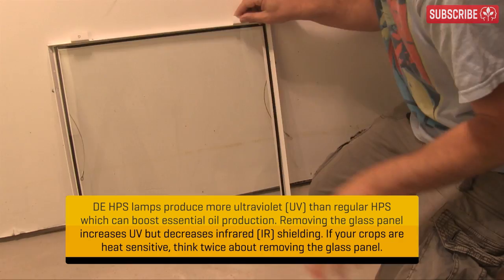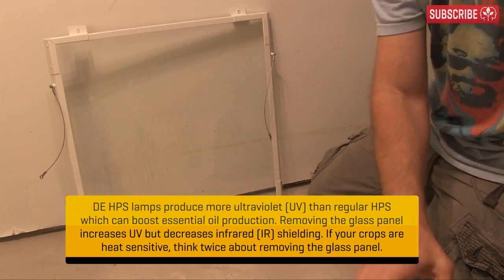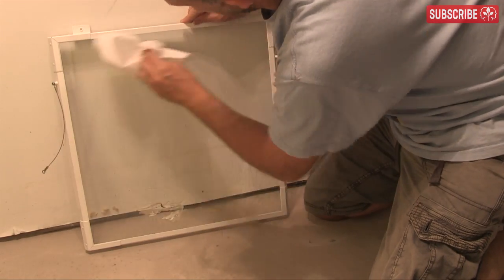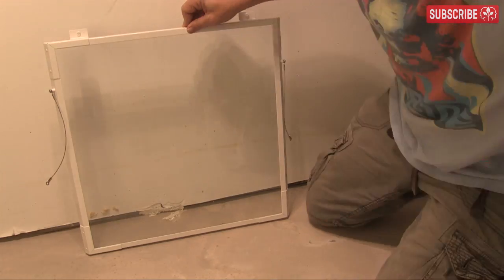So if you're using air-cooled reflectors, clean them regularly people. Remember that a 5% drop in PAR is more than compensated for by the fact that you can probably lower your hoods by at least a few inches without causing heat stress to your plant canopy.